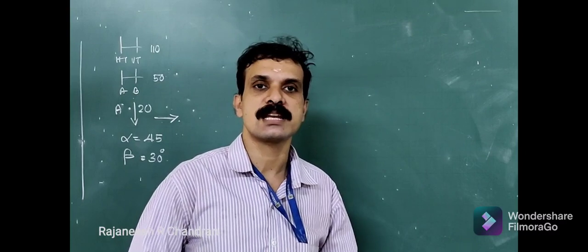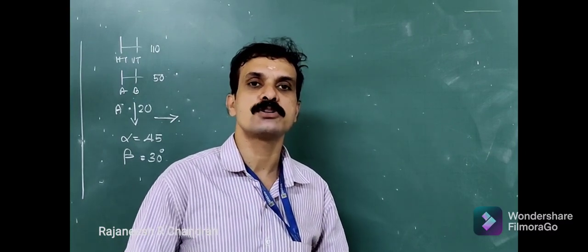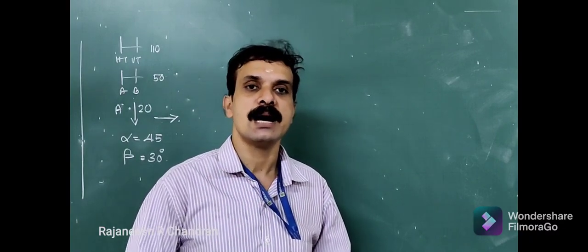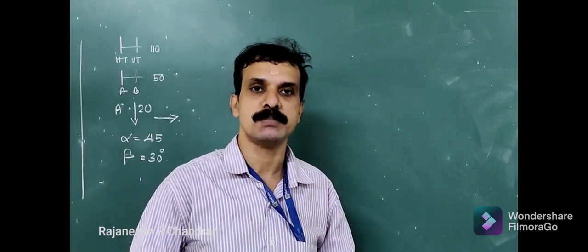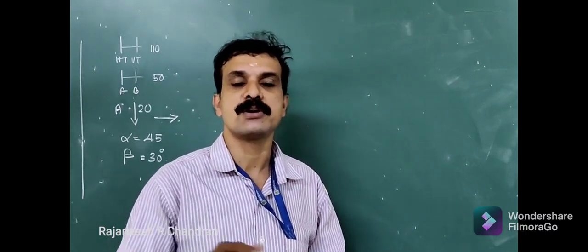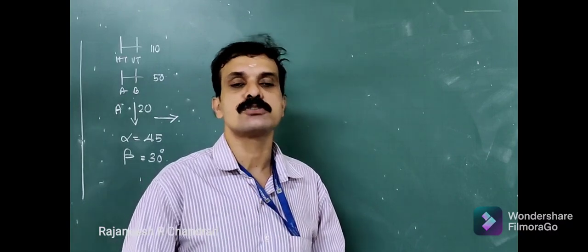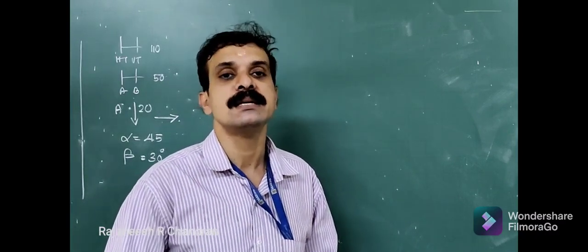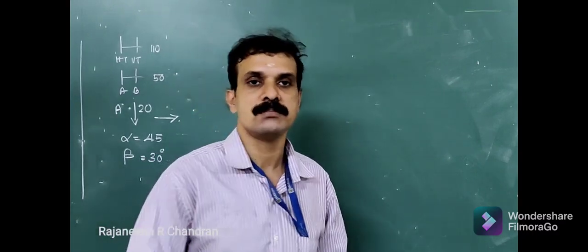The question you can see on your screen: the projectors drawn through the end points of a line AB are 110 mm apart, and those drawn through its endpoints are 50 mm apart. Point A is 20 mm below HP and in front of VP. The top and front views of the line are inclined at 45 degrees and 30 degrees respectively. Draw the projections and obtain the true inclination of the line.